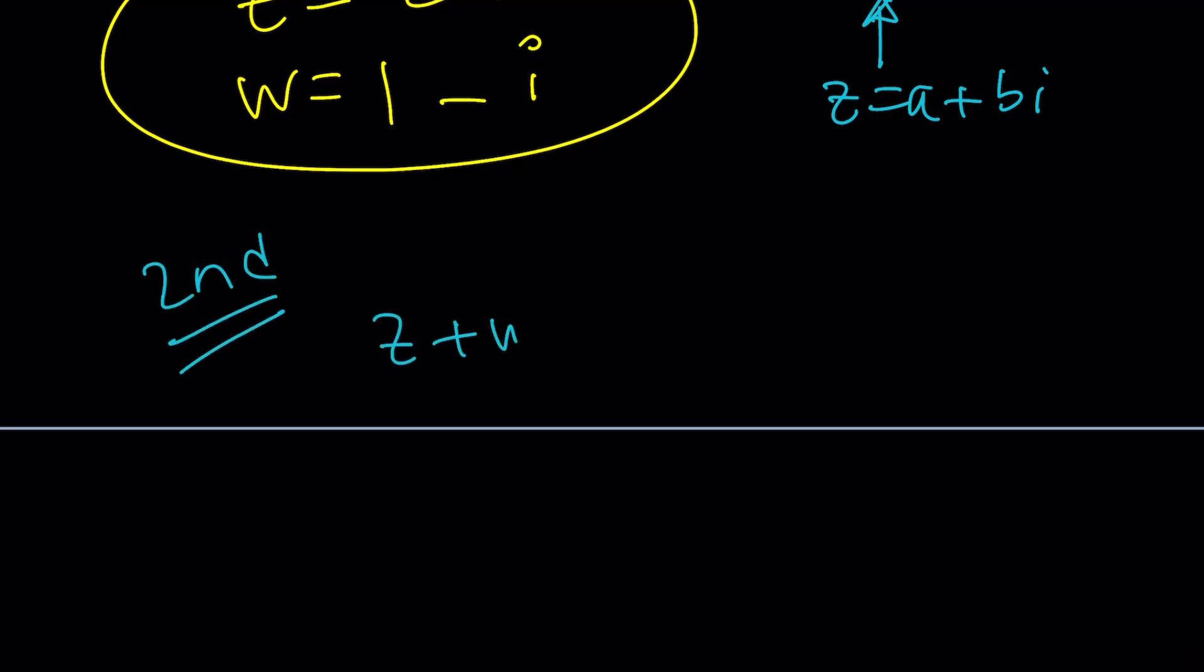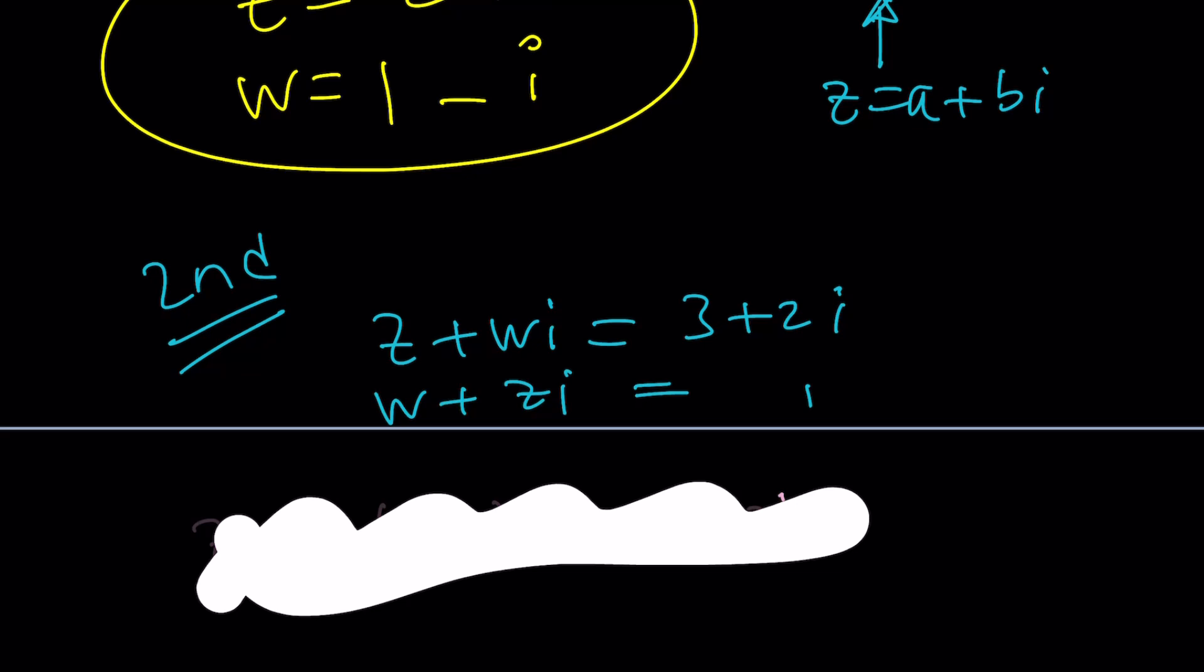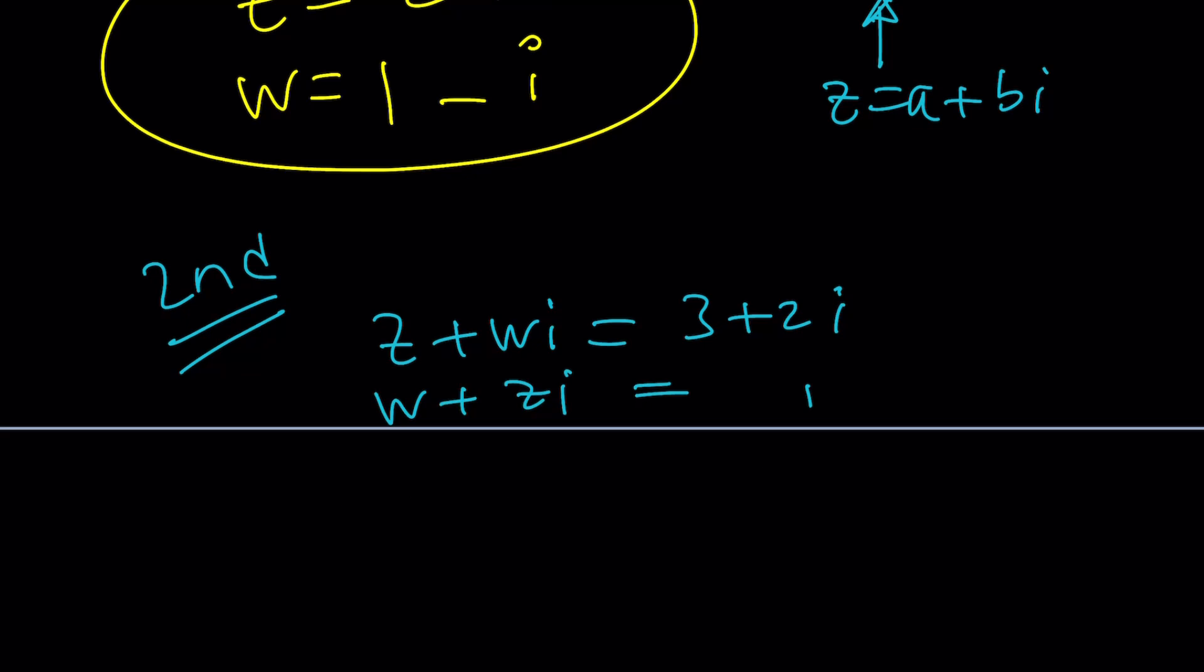Let's go ahead and take a look at the second method real quick. We have z plus wi equals 3 plus 2i and w plus zi equals i. By the way, remember, I told you at the very beginning, if you add these equations, you're going to get something like z plus w plus (z plus w)i equals 3 plus 3i. And for me, immediately, you get this 3. What does that mean? I don't know. You still have to use one of the other equations, which is more work.